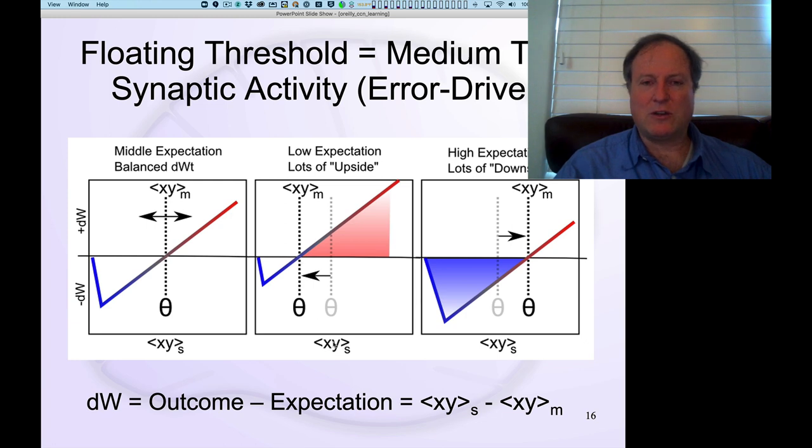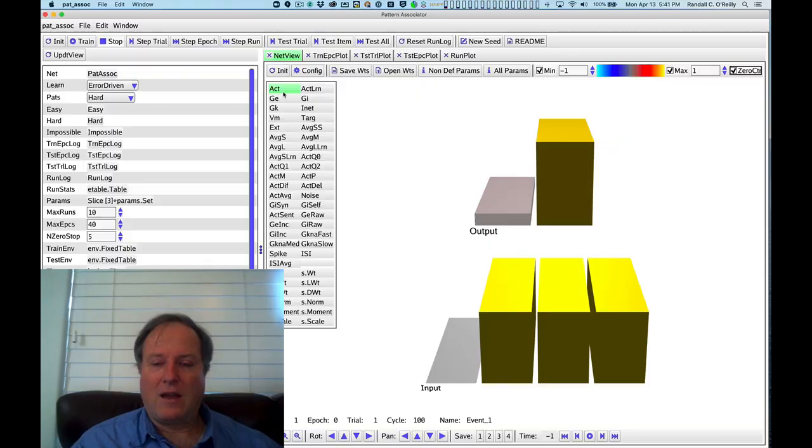That fits better with the fact that we know that the calcium, which is the kind of Hebbian term, this x times y, is what's actually driving the plasticity.